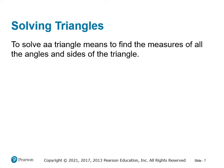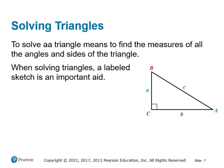When we solve a triangle, what this means is to find the measures of all the angles and all the sides. It's a good idea to label a triangle. The uppercase letters are the angles and the lowercase letters are the sides — the lengths of the sides. They are labeled such that the side opposite the angle has the same letter.